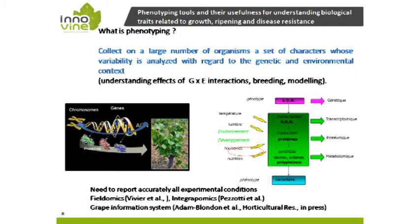We may use a lot of different phenotyping devices. Phenotyping, by general definition, is a collection of a set of characters on a large number of organisms. These characters are analyzed and their variability is assessed in the context of a genetic and environmental background. The aim is to understand the effects of genotype and environment interaction, and this may be used by breeders, modelers, and agronomists.